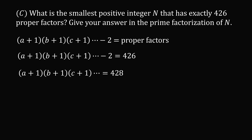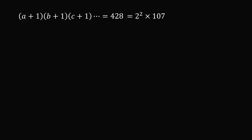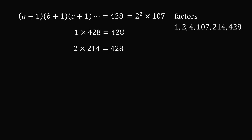Let's do the prime factorization of 428: it equals 2 squared times 107. The factors of 428 are 1, 2, 4, 107, 214, and 428. We need to find all ways two or more factors multiply together to give 428: 1×428, 2×214, 2×2×107, and 4×107. These give us the four candidate factorizations to consider.